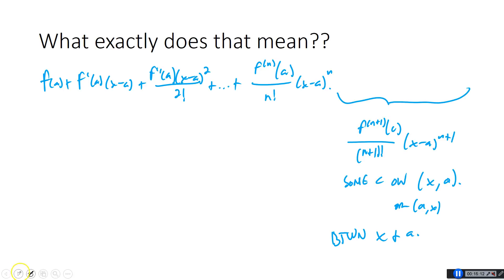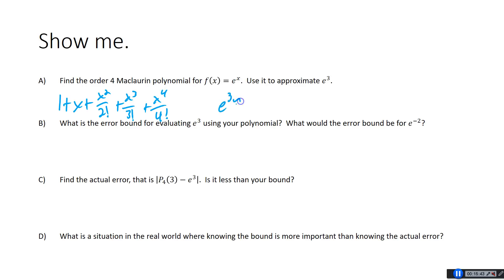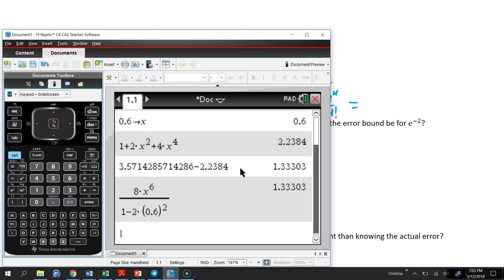Let's find the order 4 Maclaurin polynomial for f(x) = e^x. That's just 1 + x + x²/2! + x³/3! + x⁴/4! — you should have that memorized. Now we're going to use that to approximate e³. So e³ ≈ 1 + 3 + 3²/2! + 3³/3! + 3⁴/4!. I'll store 3 for x and compute 1 + x + x²/2! + x³/3! + x⁴/4!, which gives me 16.375. That is not exactly e³, but it's an approximation using the fourth order Maclaurin polynomial.